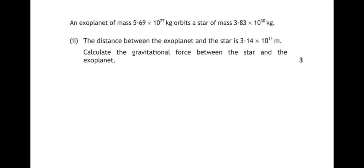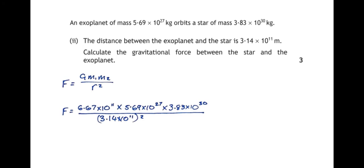The distance between the exoplanet and the star is 3.14 times 10 to the power of 11 meters. Calculate the gravitational force between the star and the exoplanet. So, the gravitational force, we're going to use Newton's inverse square law of gravitation. F equals GMM over R squared. Now, the two masses are the mass of the exoplanet and the mass of the star. It doesn't matter which one we put in which place. R is the distance between the center of the two objects. But if they are very, very far apart, that almost doesn't make any difference. 3.14 times 10 to the power of 11 meters.